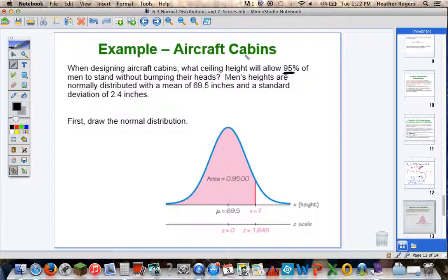Because the taller your cabin height, the more expensive the plane. So, you want to try to minimize cost. You're an engineer. You want people to be comfortable, but you want to minimize cost. So, you've determined 95% is the percent that you want to make happy. Men's heights are normally distributed. Very important to be normal because now we can draw the bell curve with a mean of 69.5 and standard deviations of 2.4.